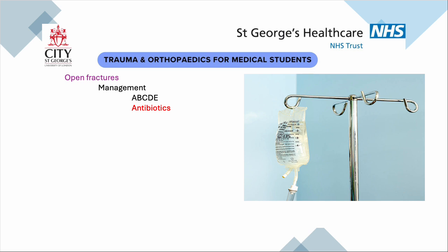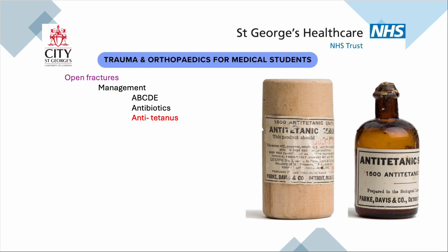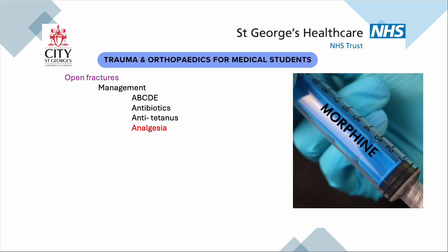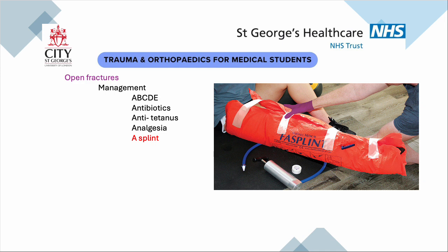Once you've done your ABCs, you're going to give them broad spectrum antibiotics because these are an infection risk — start the antibiotics as soon as you can. Give them anti-tetanus because these are open wounds. Give them analgesia — these things hurt. And give them a splint. You can use a vacuum splint full of beans — you put it on, suck it, and it compresses around the fracture making it very stable. This gives analgesia by stopping the fracture from moving, and it stops those spikes of bone from damaging the soft tissues further. The simplest splint for a femur or tibial fracture is to tie the legs together, using the other leg as a splint, until you get to hospital.